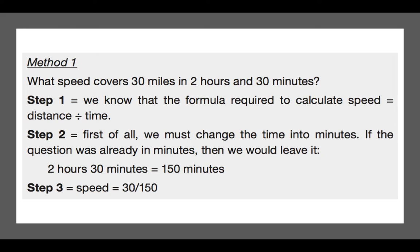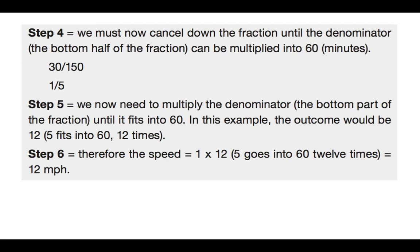So step three, speed therefore equals 30, which is 30 miles divided by 150 minutes, because that's the formula. So all we need to do now is cancel down that fraction until the denominator, the bottom half of the fraction, can be multiplied into 60 minutes. So 30 divided by 150 is 1 divided by 5.